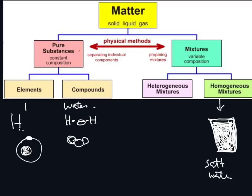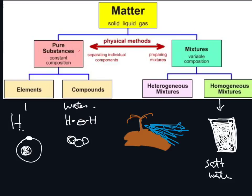A heterogeneous mixture is different. For example, when you go to the beach, the sand does not mix with the water. If you take the water and put sand into it, you will see the sand at the bottom — it doesn't mix with the water. This is an example of a heterogeneous mixture. So you have elements, compounds, heterogeneous, and homogeneous mixtures — they are separate.